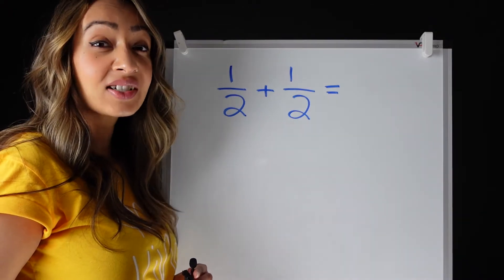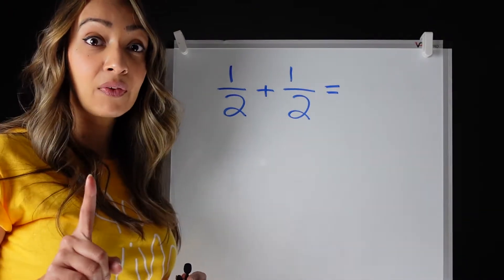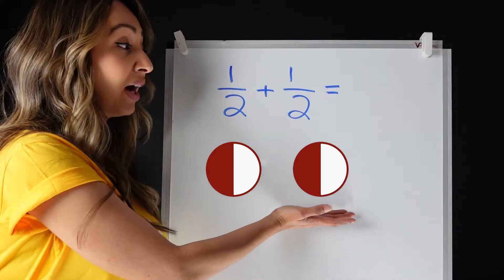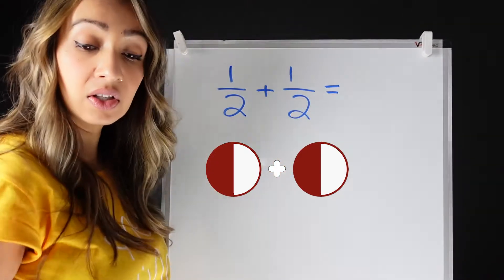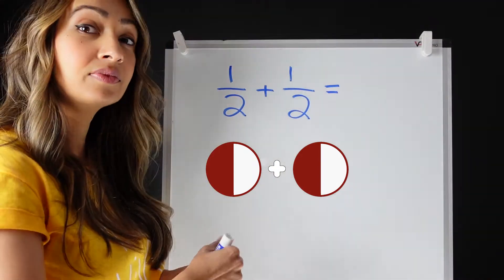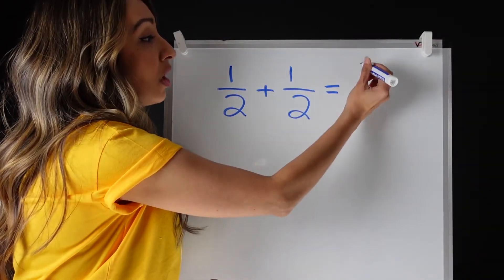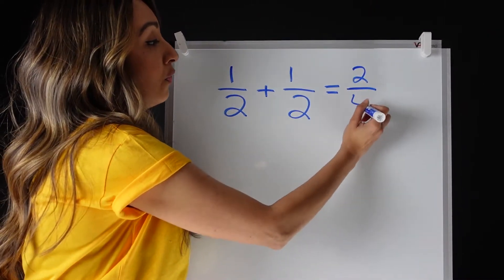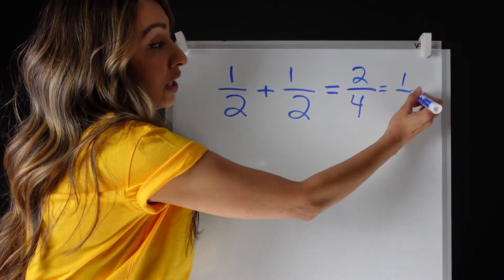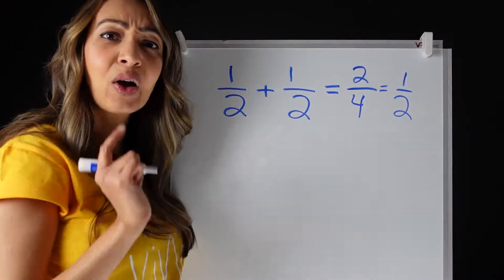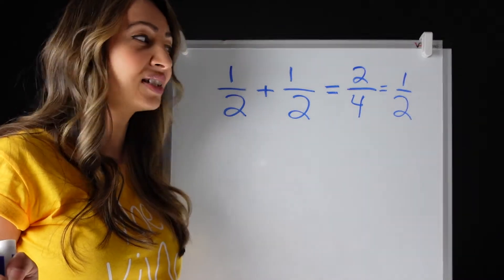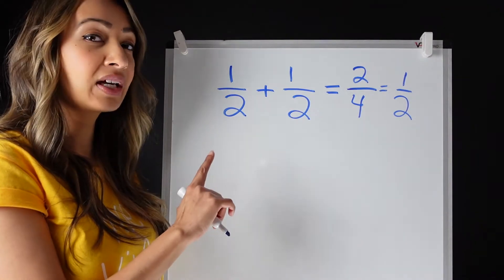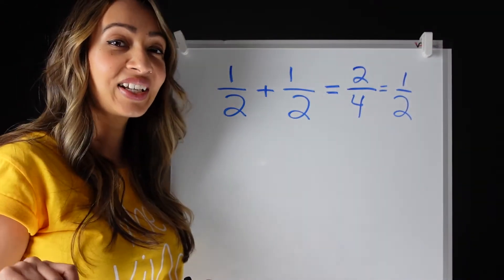So when we're adding fractions, we can't just add them across — so be careful. If I have half a pie and another half a pie and I add them together, if I just add it across, I would have two-fourths, which actually equals one half. But I know that half plus half doesn't equal half. So be careful when you're adding fractions. Let's find out some strategies.